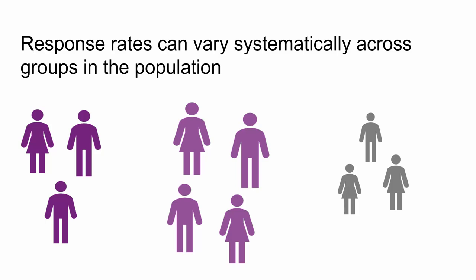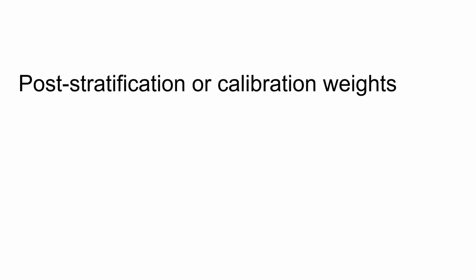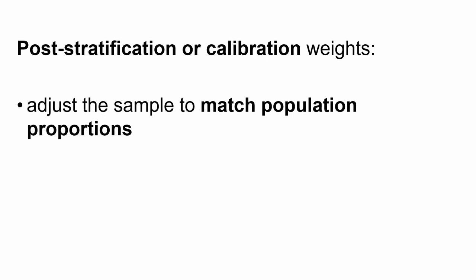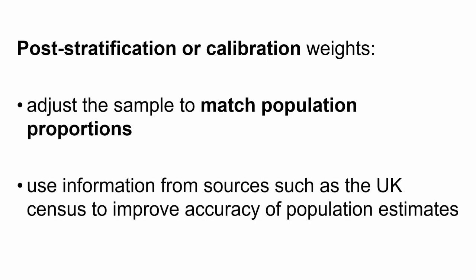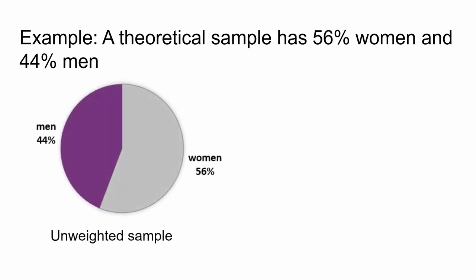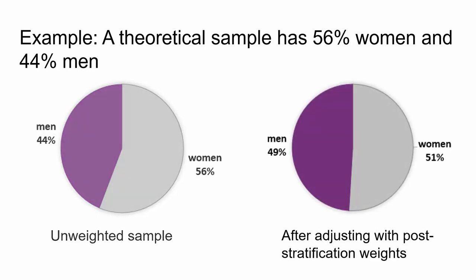Non-response weights use information about response rates for subgroups to adjust data and limit potential bias. We can also use weights to adjust the sample to reflect key population proportions. Known as post-stratification or calibration weights, they use information from sources such as the UK census to improve the accuracy and precision of population estimates, and they are often used by statistical agencies. For example, here we can see a theoretical sample which is 56% women and 44% men. After adjusting with post-stratification weights, this better represents the population with 51% women and 49% men.